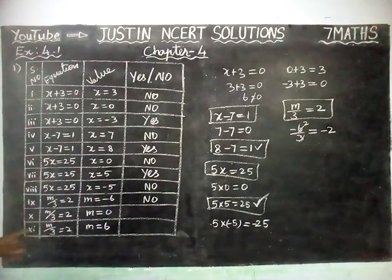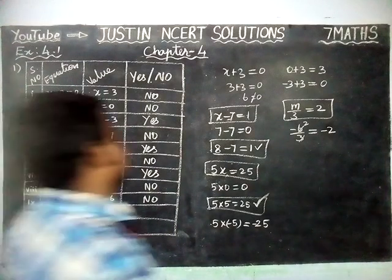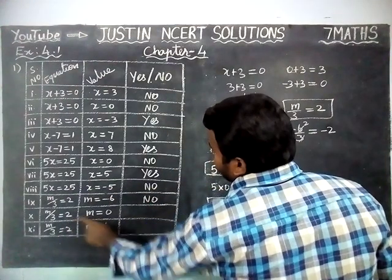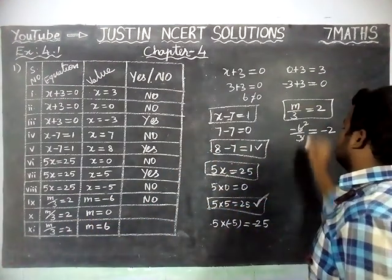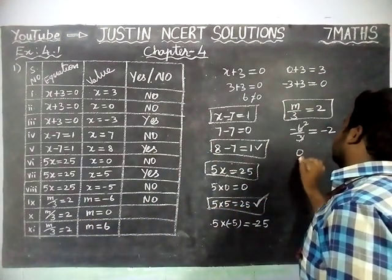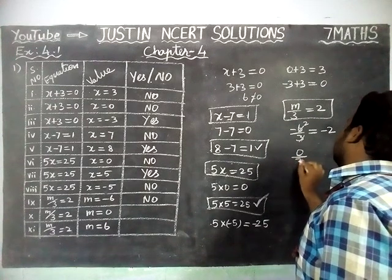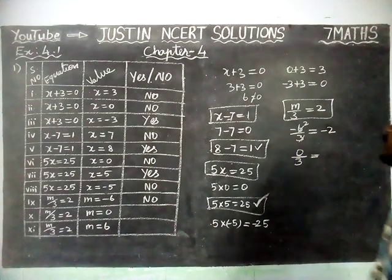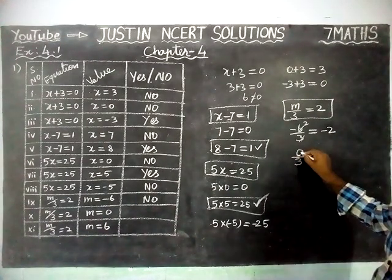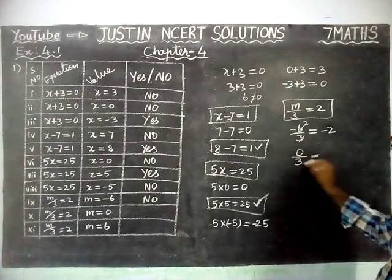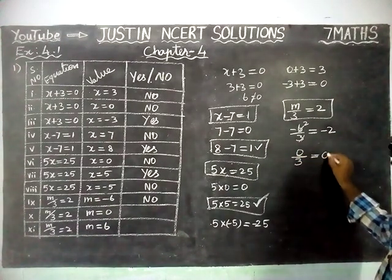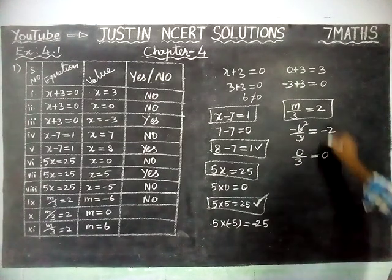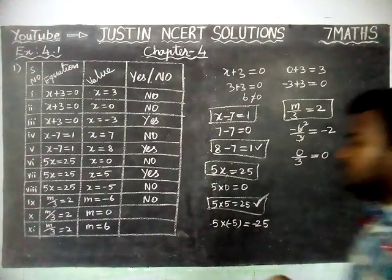Second one: M divided by 3 is equal to 2, M value is equal to 0. We are going to substitute — 0 divided by 3. If 0 is divided by any number, we will get 0 only. So this is not satisfied, no.